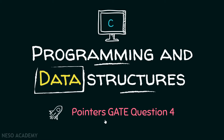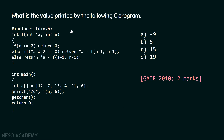In this presentation, we will see one question related to pointers. What is the value printed by the following C program? Here is a C program available in front of us. We need to determine the output. Is it A: minus nine? Is it B: five? Is it C: fifteen? Or is it D: nineteen? This question has been asked in GATE 2010 for two marks.